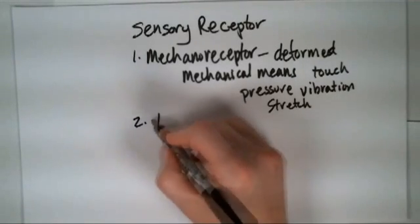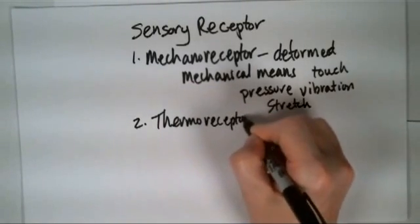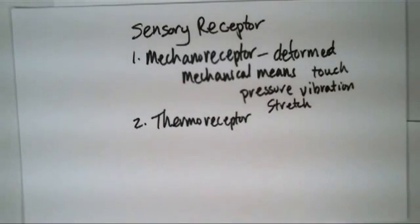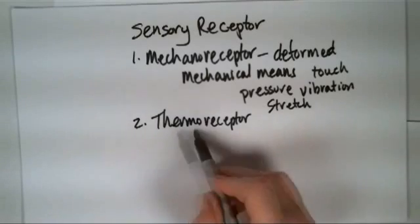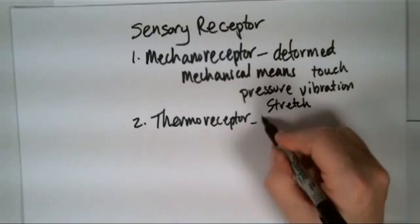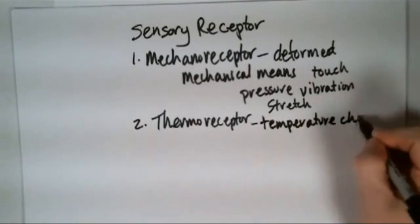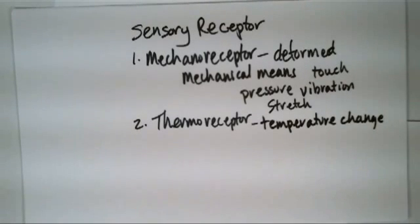Another type of sensory receptor, if you're going to classify them by the type of stimulus that they receive, that second type is going to be a thermoreceptor. Your thermoreceptor, it's exactly as it sounds. Thermo means heat, we're talking about temperature here. You get a change in temperature and the temperature change in the environment, that stimulus gets picked up.